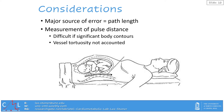Pulse wave velocity is only accurate if performed under the conditions for which it has been validated. We will be standardizing conditions, and an additional consideration is that the major source of error for this measurement is path length. We need to be able to measure the distance between the two sites of interest. As you can imagine, these measurements can be challenging in pregnant women.